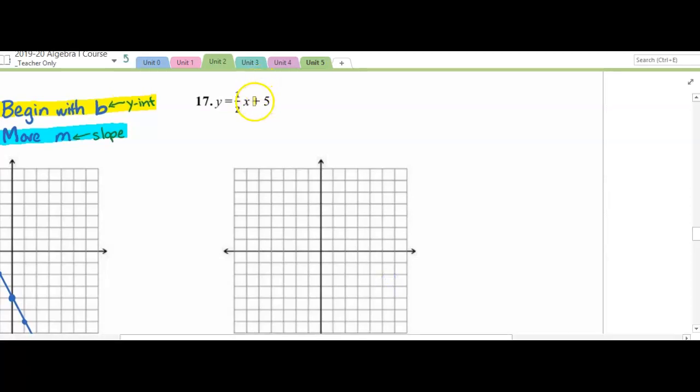Let's try another one. I'm going to begin with b and I'm going to move m. So if I begin with 5, that's 1, 2, 3, 4, 5 on the y axis. And I'm going to go up 1, right 2, over and over. Notice I can also do the opposite. Go down 1, left 2. That'll continue the line to the left. And then I connect my points.